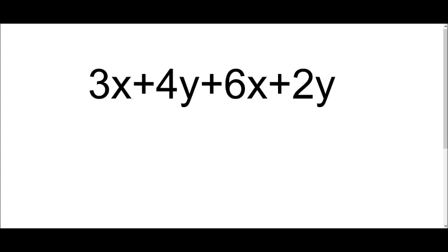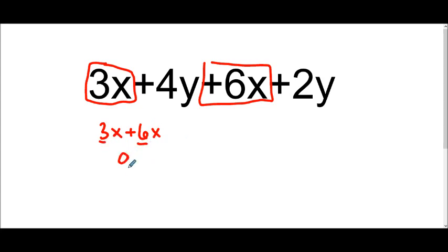We want to start by putting our terms that have the variable x together. So I have 3x plus 6x, which when we add the coefficients of 3 and 6, we get 9, and we keep the variable of x.